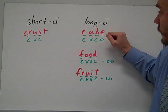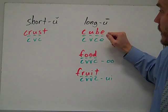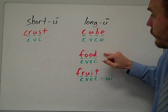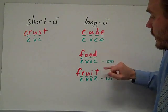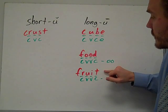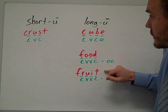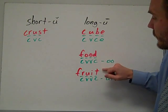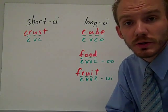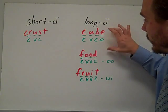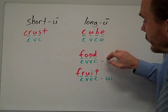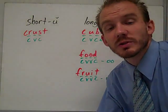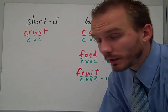Now long U — you have the word cube, more of a 'you' sound. Cube, food, and fruit. So both food and fruit are more of the 'ooh' sound, and cube is more of the 'you' sound. But cube, food, fruit sound very similar when you speak them quickly.